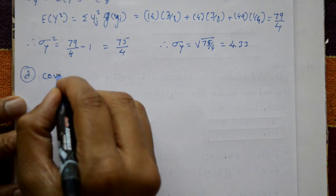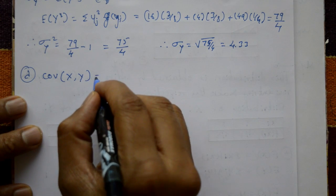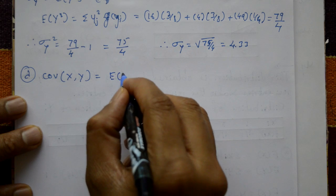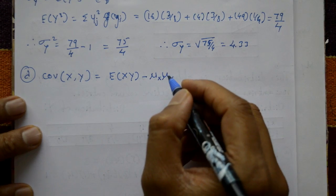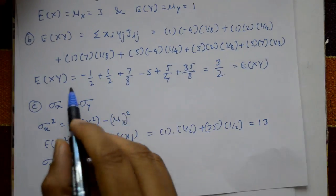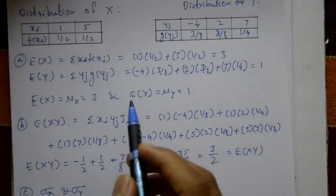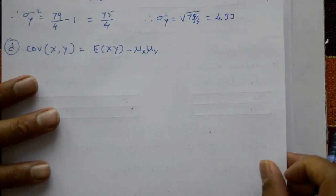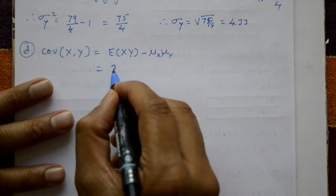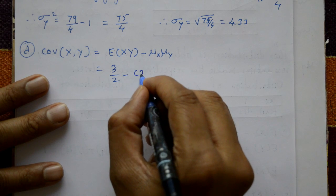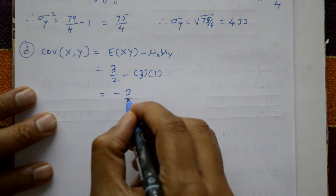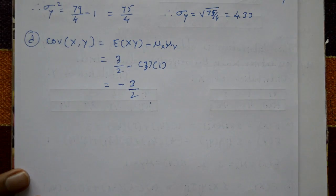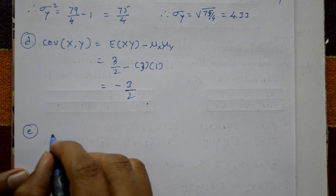For part (d), covariance of X and Y. The formula is Cov(X,Y) = E(XY) − μₓ · μᵧ. Substituting: Cov(X,Y) = 3/2 − (3)(1) = 3/2 − 3 = −3/2.